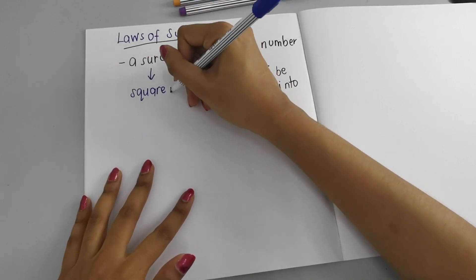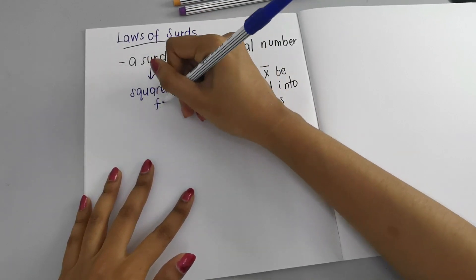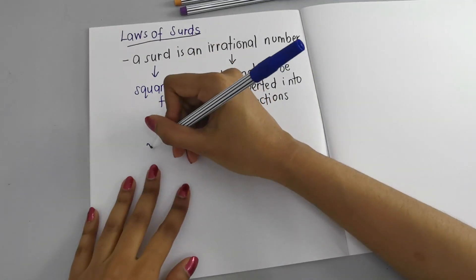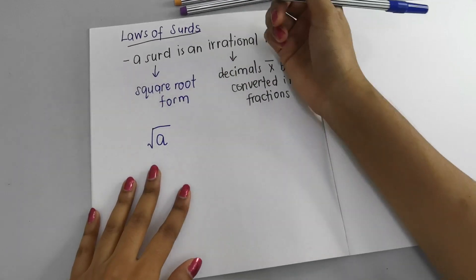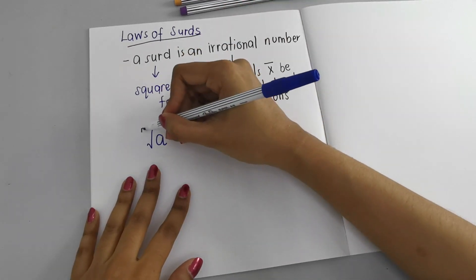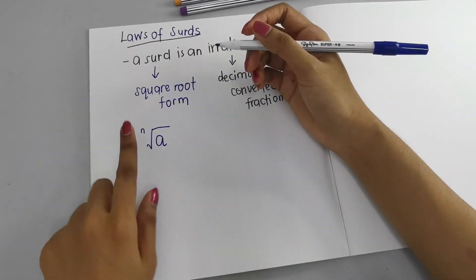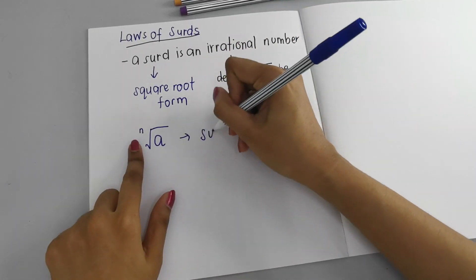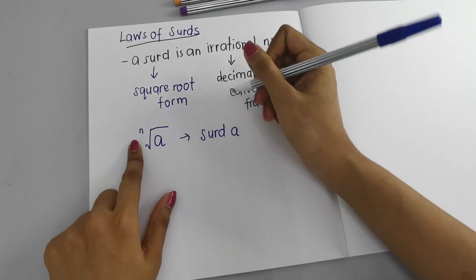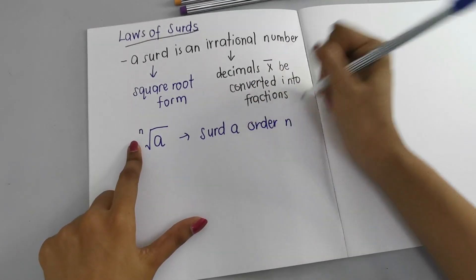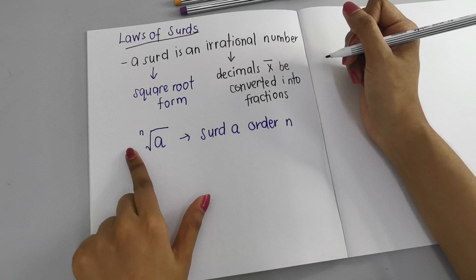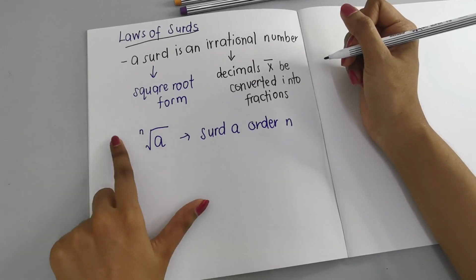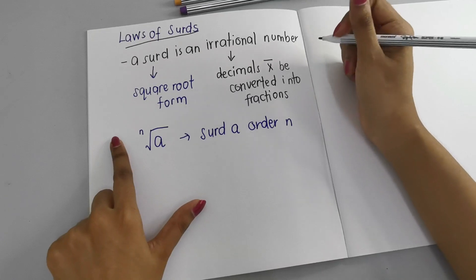It will always be in square root form. Now let me show you how we write it: you have the square root of a, and then you have the power. How do we pronounce this? We say 'surd a of order n' — so we say surd instead of square root or cube root. We say 'surd a of order n.'